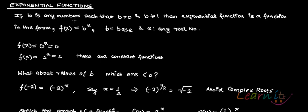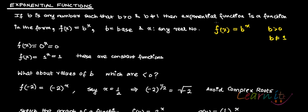So if b is any number such that b is greater than 0 and b is not equal to 1, then an exponential function is a function of the form f(x) = b to the power x. So if you have a function of the form f(x) = b^x, where this base b is greater than 0 and not equal to 1, then f(x) = b^x is an exponential function.